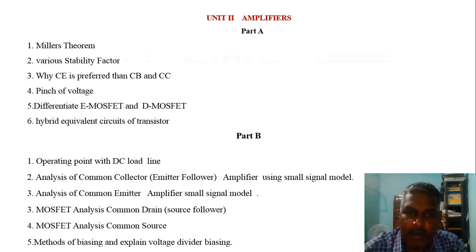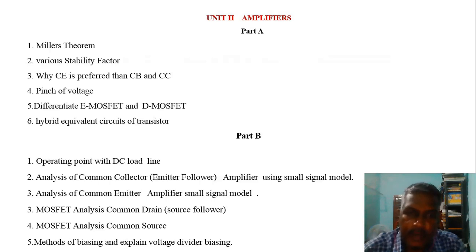The key problem types are: emitter follower, common emitter amplifier, common drain, and voltage divider biasing problems. The second unit is largely focused on problems, and knowing these types covers most of what is needed.